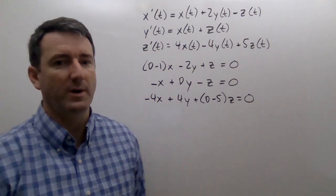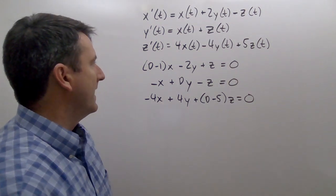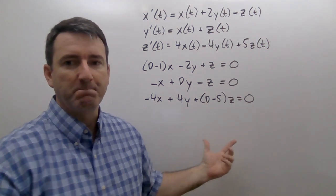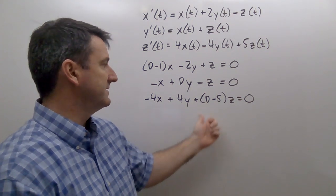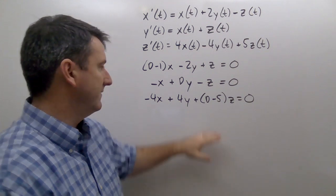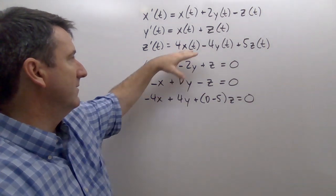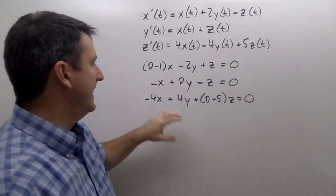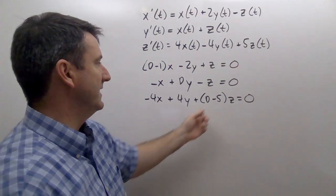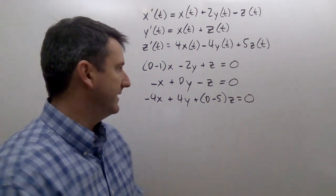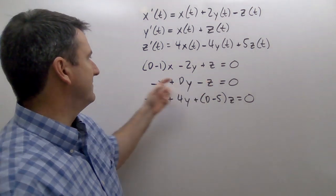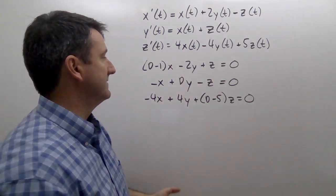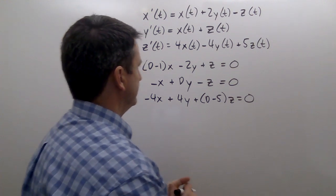Now we have this system of equations in operator form. What we want to do next is turn this into a 2 by 2 system with just x and y. We'll have two equations: the first will come from combining the first two equations so that z is eliminated. To eliminate z from those first two equations, all we have to do is add them together, because z plus negative z gives us 0.